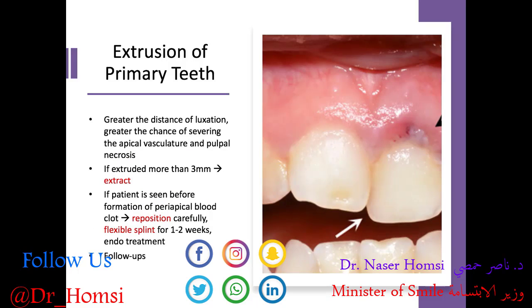For extrusion of the primary tooth — the tooth has been partially extruded out from the socket. The greater the distance of luxation, the greater the chance of severing the apical vasculature and causing pulpal necrosis. If the tooth is extruded more than 3 millimeters, we recommend extracting and maintaining space. But if the patient is seen before formation of a periapical blood clot, we can reposition the tooth carefully, place a flexible splint for about one to two weeks, and then perform any necessary endodontic treatment. Follow-ups are also recommended.